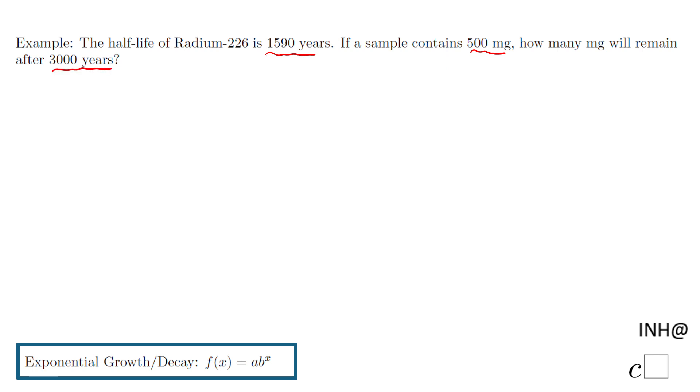Just looking at this, I can guess an approximation. We start with 500 milligrams. In 1590 years we have half of this—that's the meaning of half-life. If you do it one more time, 1590 years, that would be more than 3000, but just as an idea we get 125 milligrams.